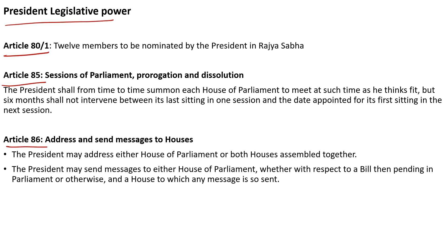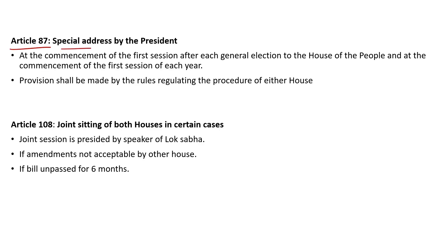Article 80 covers the president's nomination to the Rajya Sabha. Article 87 covers the Special Address by the president at the first session of each new parliament after a general election. Article 108 covers the joint sitting of both houses in certain cases, where the Speaker presides. Joint sessions have been used in landmark cases such as the Banking Service Commission Act and the Prevention of Terrorism Act.